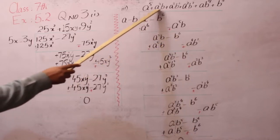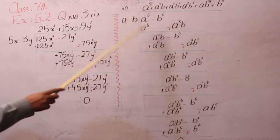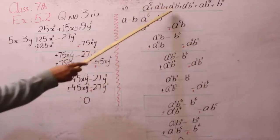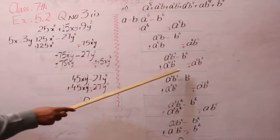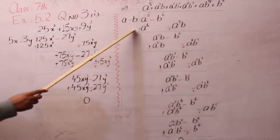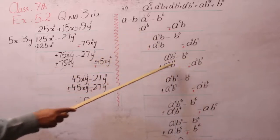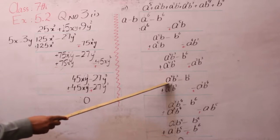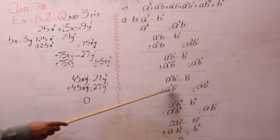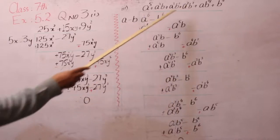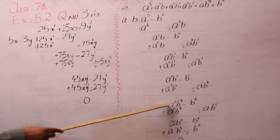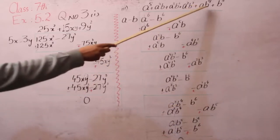अब हमें a की 5b बनाना था, तो a की 4b required है। उससे हमने multiply किया, b से किया — तो minus a की 4b की 2 आगे। इसे ऊपर लिखा। अब हमें चाहिए a की 4, a की 3b की 2 चाहिए — b की 2 से multiply किया, a की 4 और b की 2 आ गया। Same as it — b से multiply करेंगे तो a की 3b की 3 आएगा। Sign change हुए, यह value, यह value यहां पर आगे ठीक हो गए। b को इससे multiply किया तो a की 2 और b की 4 बन गया। फिर sign change हुए।